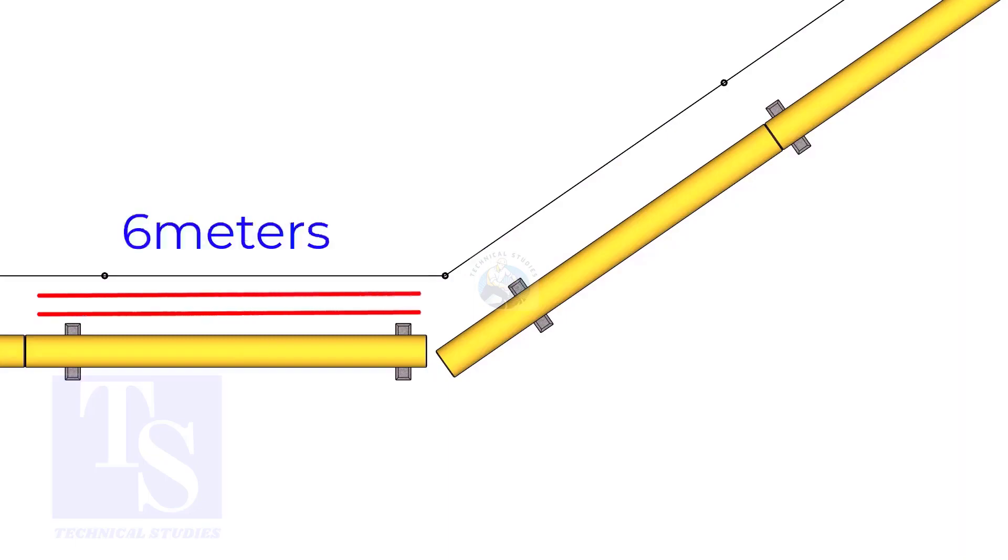The pipe shall be parallel to the fencing, not necessarily the entire length, but at least 6 meters on both sides.